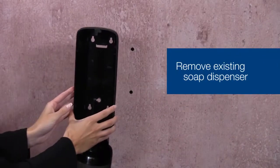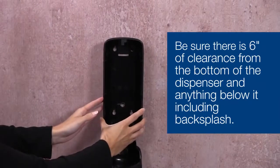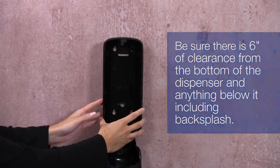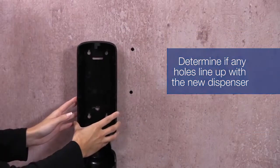After removing your existing soap dispenser, hold the S4 TORQ foam soap dispenser up to the wall to determine if any of the current holes will line up with the variable mounting slots in the back of the S4 dispenser.